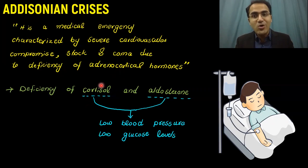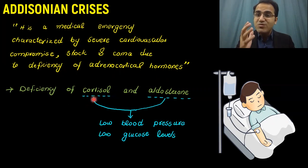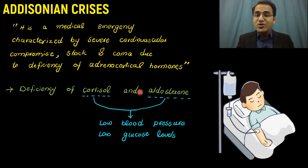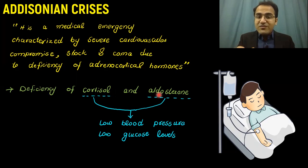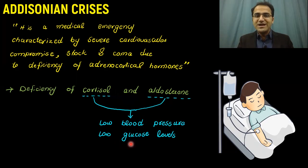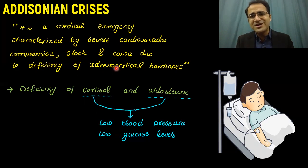Adrenocortical hormones include cortisol and aldosterone. Cortisol is a stress hormone in the body — it helps the body fight stressful situations and maintains both blood pressure and blood glucose levels. Aldosterone causes salt retention, ultimately contributing to blood pressure. If cortisol and aldosterone are absent, there will be low blood pressure, low glucose levels, and the body won't be able to cope with stressors, leading to shock, cardiovascular compromise, and ultimately coma.